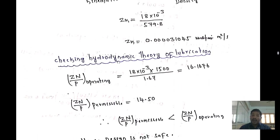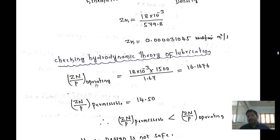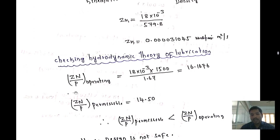Now we check the hydrodynamic theory of lubrication. The condition for a safe design is: (ZN/P)_permissible > (ZN/P)_operating. Computing the operating value: ZN/P = (18 × 10⁻³ × 1500) / 1.67 = 16.1676. The permissible value is 14.50. Since 14.50 < 16.1676, the design is unsafe.